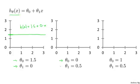If Theta 0 equals 0, Theta 1 equals 0.5, then the hypothesis will look like this. And it should pass through this point 2, 1, since you now have h of x equals 0.5 times x, which looks like that.